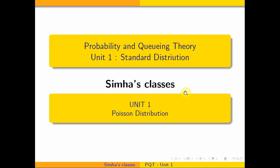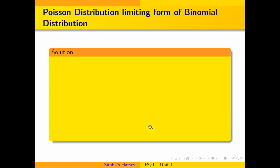In Simma's classes on probability and queuing theory, we are going to discuss how we arrive at the Poisson distribution. The question they may ask is: 'Poisson distribution is a limiting form of a binomial distribution — prove,' or they may ask you to obtain the Poisson distribution as a limiting form of the binomial distribution.